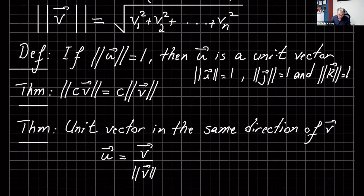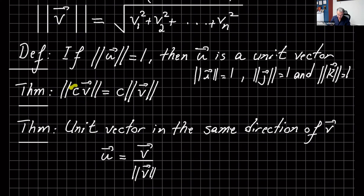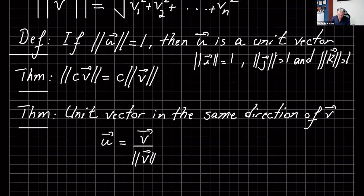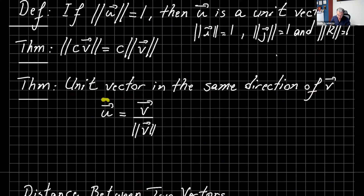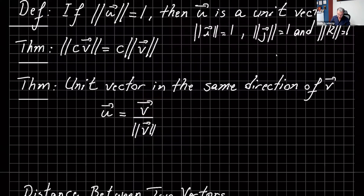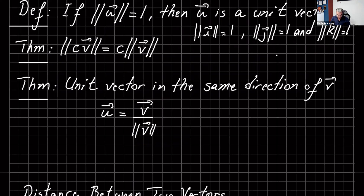There is a theorem that says the norm of c times v, where c is a scalar or constant, is the same as c times the norm of v. A unit vector in the same direction as v can be written as u equals v over the norm of v. If you find the norm of u using that formula, you will get one. I will do an example.